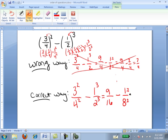Again getting a common denominator, we have 9 over 16 minus 2 over 16, which is 7 over 16, and that's the correct way.